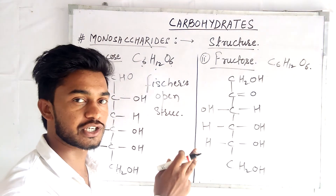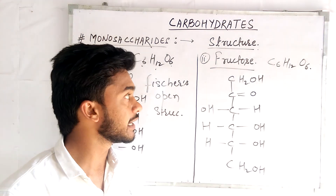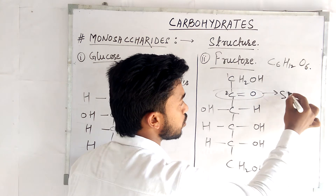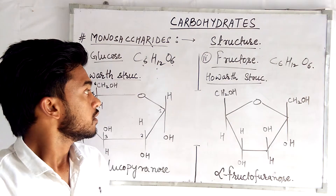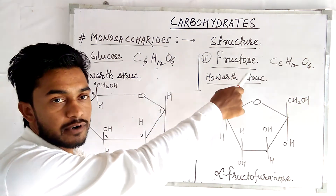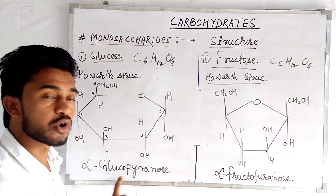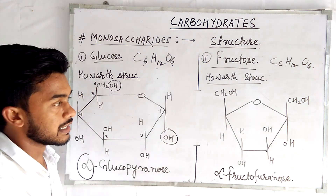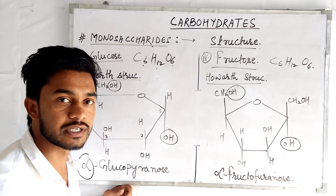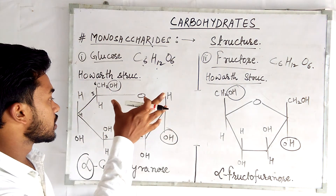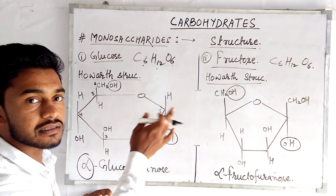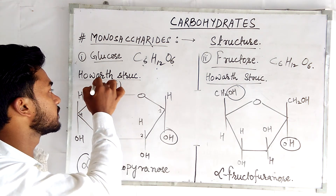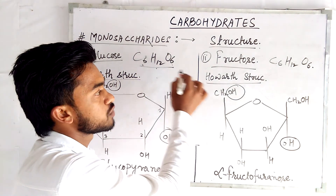Now let's look at the Haworth projection or ring chain structure of glucose and fructose. The Haworth structure of glucose is known as alpha-glucopyranose. Whether it is alpha or beta depends on the cis or trans position of the hydroxyl group. The Haworth structure of glucose contains a hexagonal ring with 5 carbons in the ring and the 6th carbon attached to carbon 5. The chemical formula for both glucose and fructose is C6H12O6.